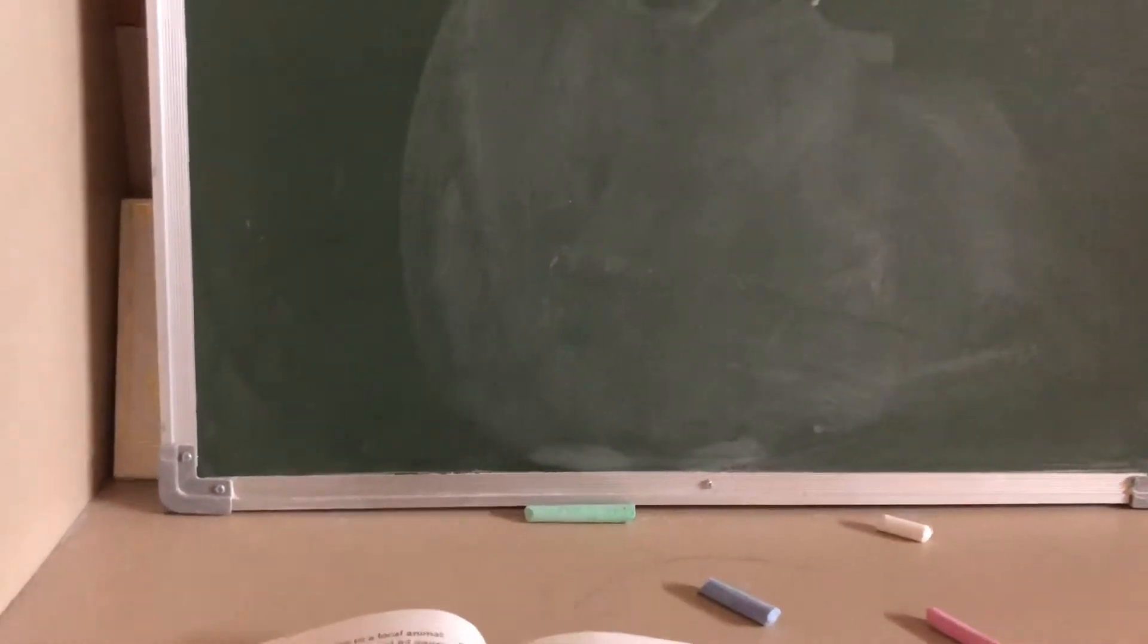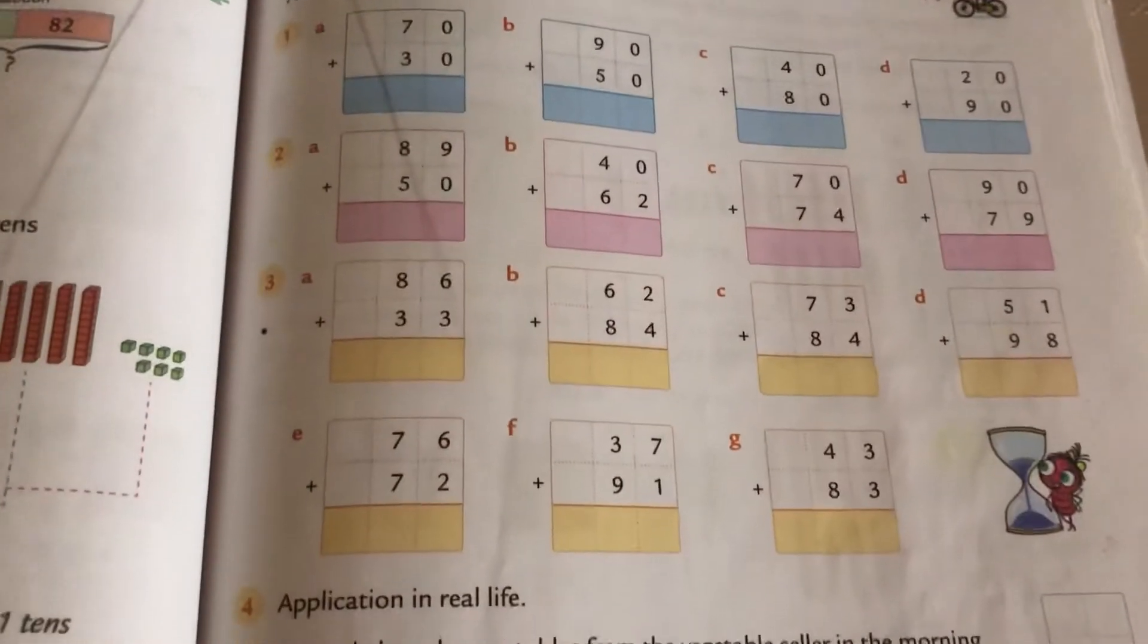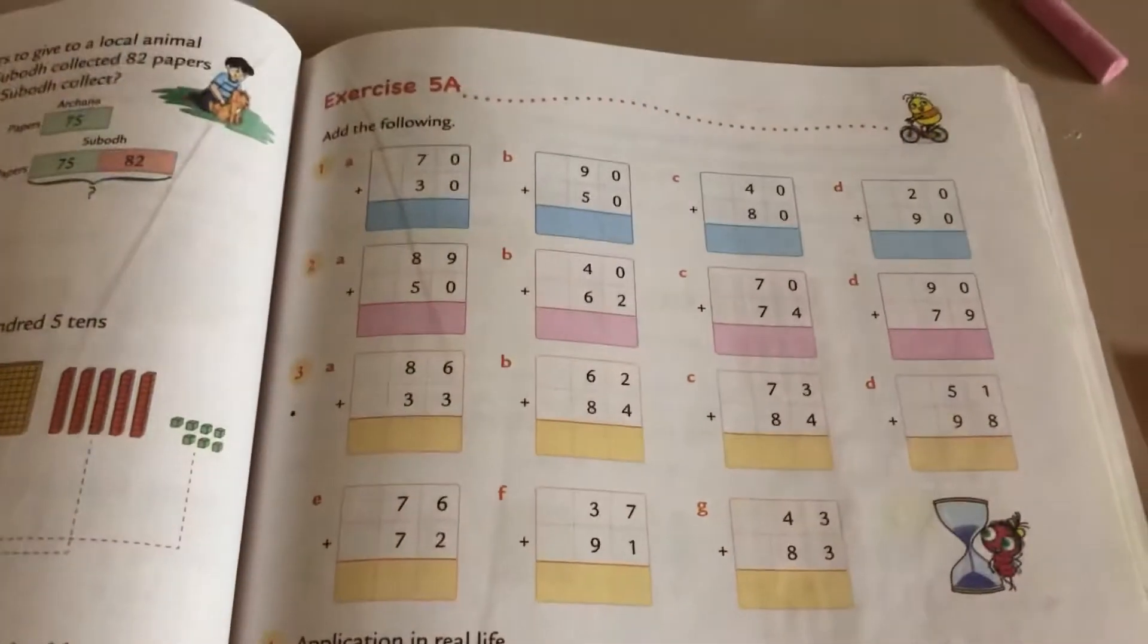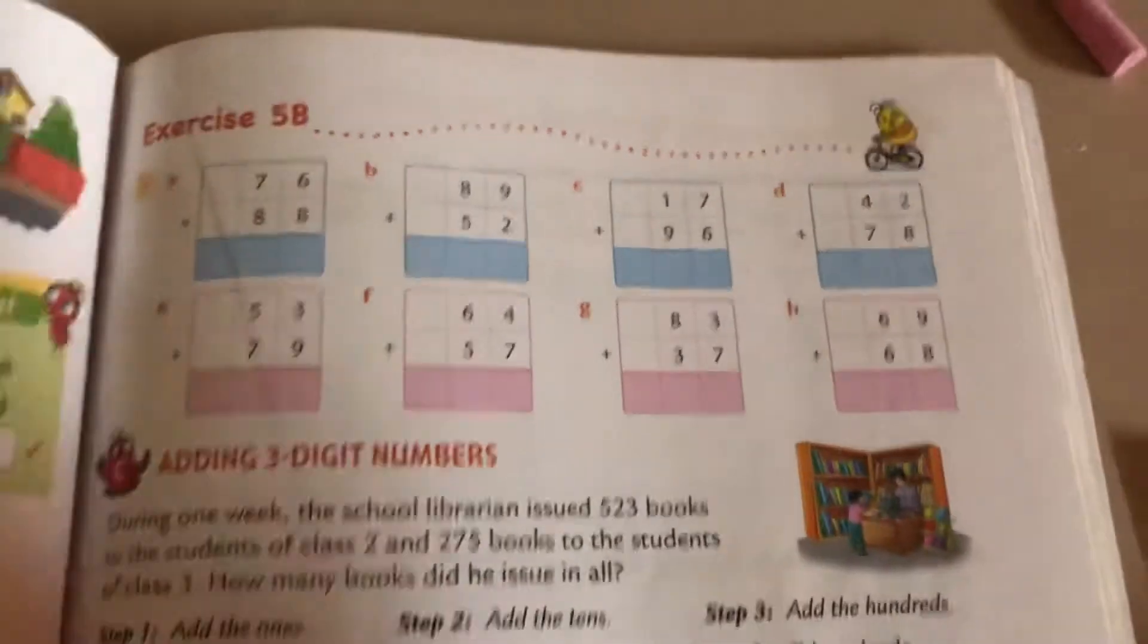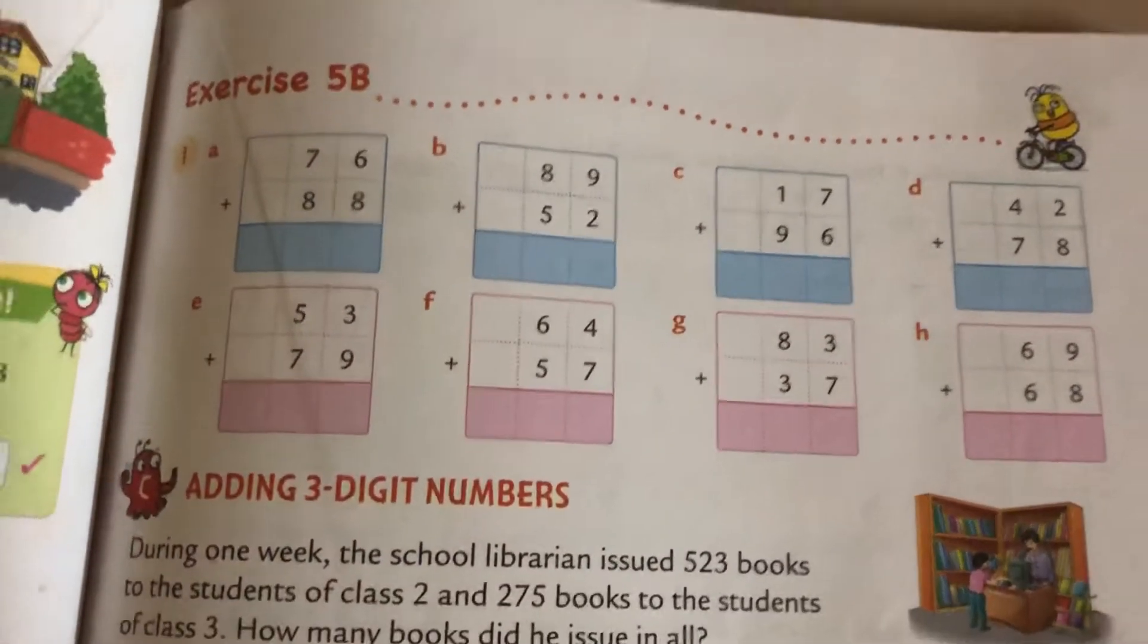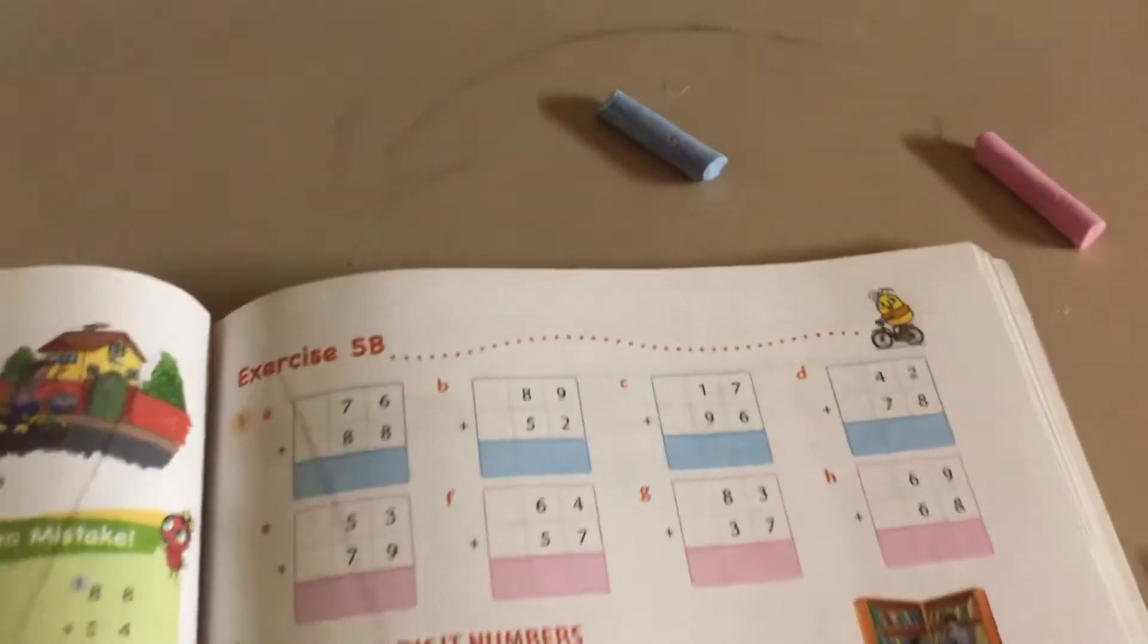Now children, you have to complete page number 81, exercise number 5A. Complete this. And page number 83 also you will complete, 5B. See, on page number 81 these are simple sums, and on page number 83 regrouping twice those sums are there. So both the practice, it will be for you.